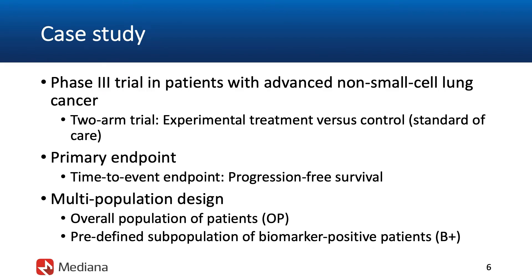The Saturn trial would have been a great example to use in this module, but this trial relied on a traditional design with a fixed number of events and a single decision point at the final analysis. The key study described on this and the next several slides provides an attempt to extend the original design used in the Saturn trial to an adaptive setting with two interim analyses. Most design elements in this case study are quite similar to what was used in the Saturn trial.